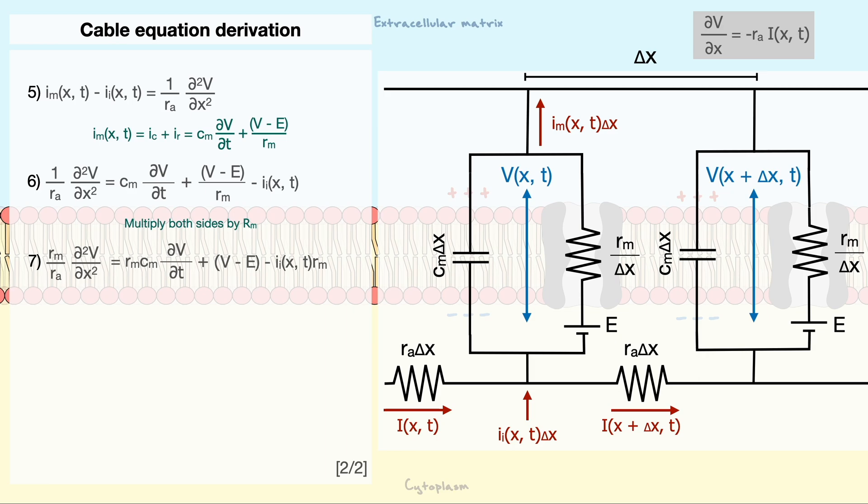To simplify it a bit, we can make two constants. First, the time constant, which we have already discussed at length in the previous section, and the second constant is the space constant, denoted by lambda. The space constant is defined as the root of the membrane resistance divided by the axial resistance. This constant has units of length.